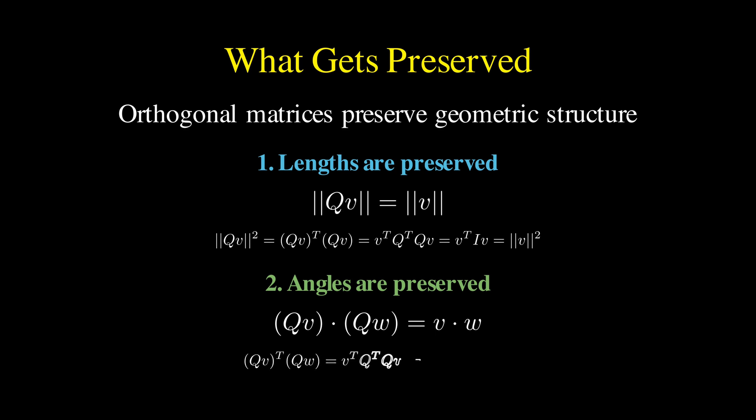The proof is similar. We have QV transpose times QW, which equals V transpose Q transpose QW. Again, Q transpose Q is the identity, so we get V transpose W, the original dot product.